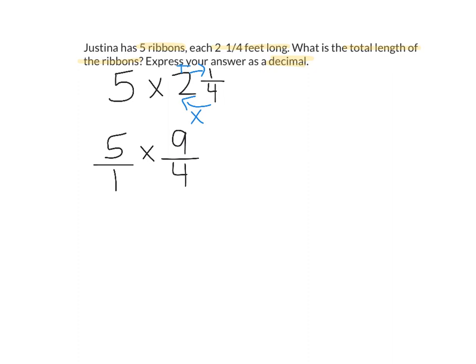We check to see if we can simplify. We can't simplify 1 and 9, and we can't simplify 5 and 4, so this time we're going to multiply straight across. Five times nine equals forty-five, and one times four equals four. Now we need to simplify forty-five fourths by changing it into a mixed number. 4 fits into 45 eleven times — 11 times 4 is 44 — which means we have one-fourth left over.